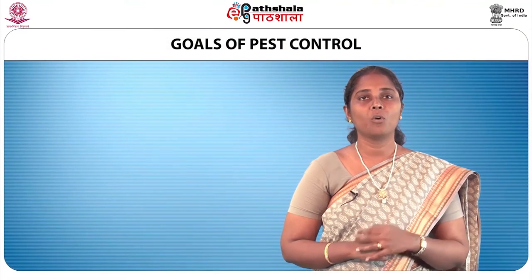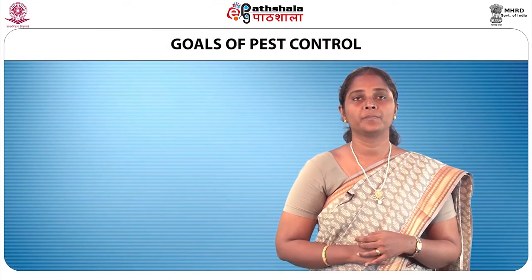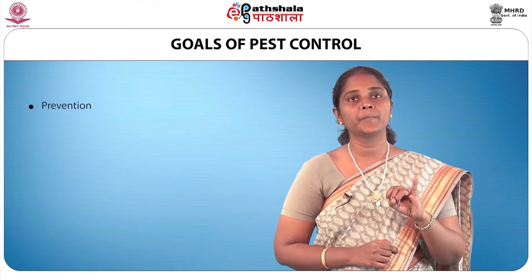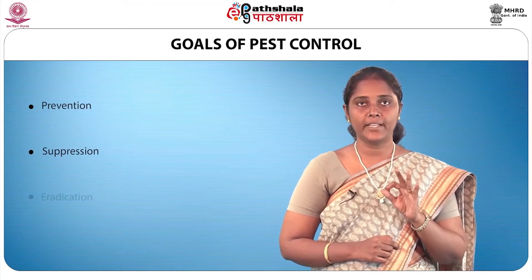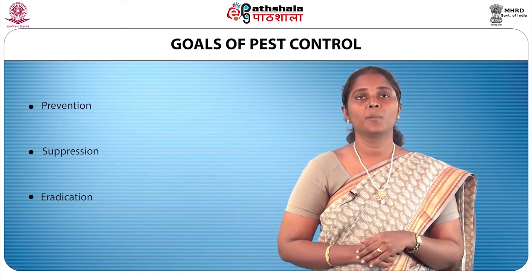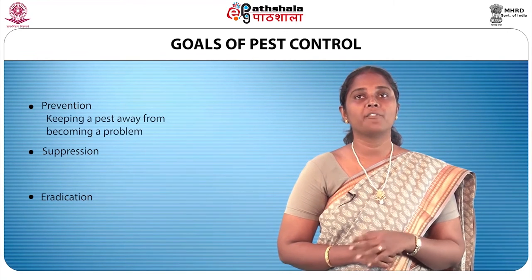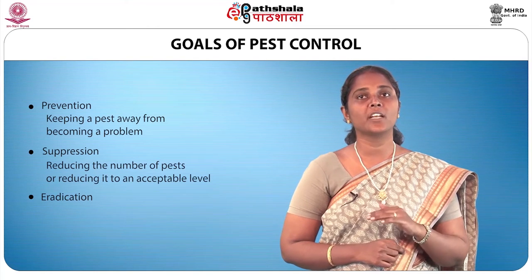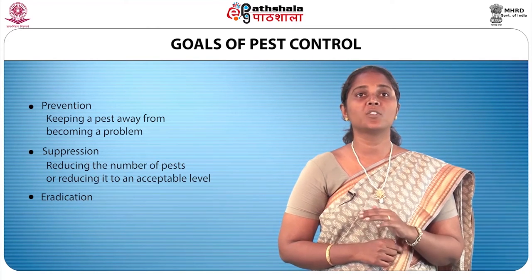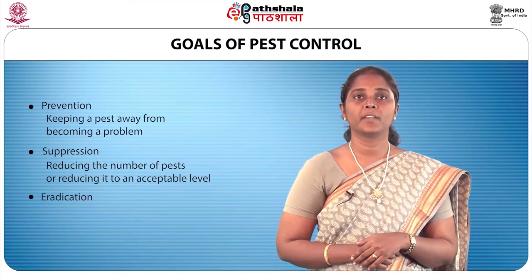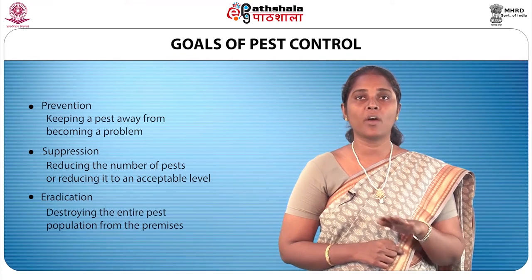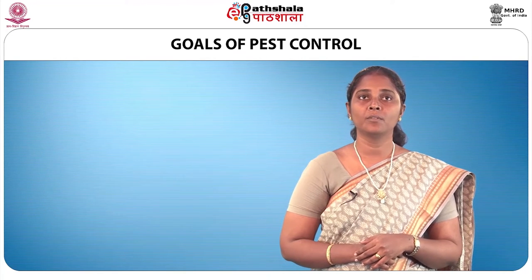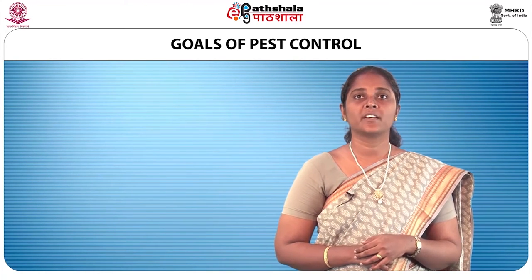The three main goals of pest control are prevention, suppression and eradication. Prevention is keeping a pest from becoming a problem. Suppression is reducing the number of pests to an acceptable level. Eradication is destroying the entire pest population from the premises. Now let us learn these goals in detail.